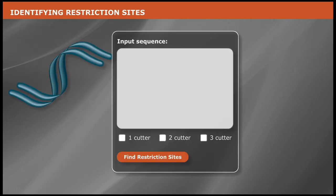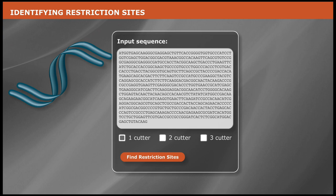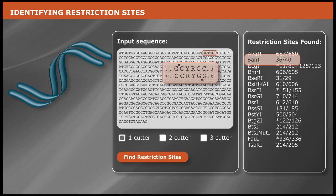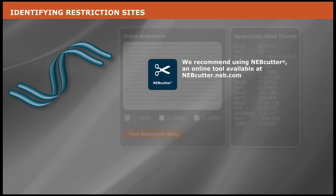The first step is to identify unique restriction sites in your source DNA that can be used to isolate the fragment of interest. We recommend using NEBCutter, an online tool available at nebcutter.neb.com.